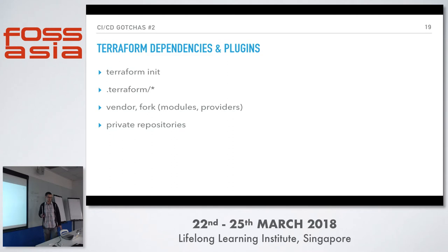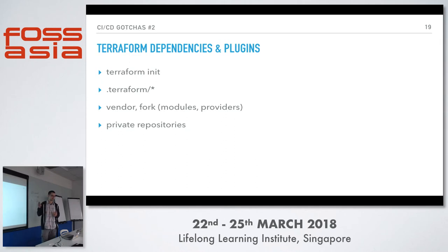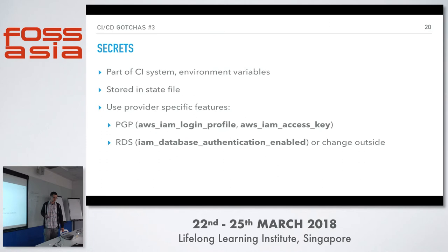A gotcha with private repositories on GitHub: once you start using Terraform modules hosted in private GitHub repos and you fork a private repo to add features, if the maintainer of the parent private repo deletes it, your fork is also gone. So if you fork someone's private repository, make sure you have a proper copy of the code somewhere else.